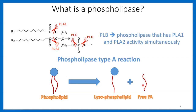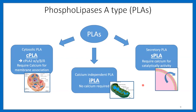Phospholipase type A can be divided into three groups: the cytosolic phospholipase type A, or cPLA, which is in the cytoplasm of the cell; the calcium-independent phospholipase type A, or iPLA, which is mainly in the mitochondria; and the secretory phospholipase type A, or sPLA, which is mainly outside the cells.